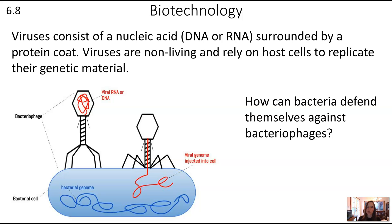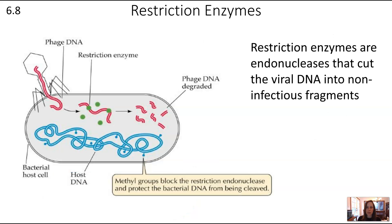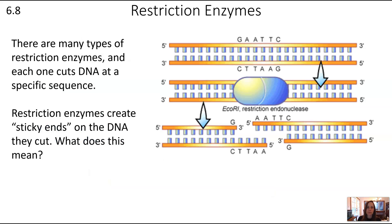Viruses can't replicate their own DNA on their own, so they need to use other cells' mechanisms to get more copies. How can a bacterial cell defend itself? One way is through restriction enzymes, which are endonucleases — enzymes that cut up DNA — chopping viral DNA into non-infectious fragments. The bacteria protect their own DNA from being cut by tagging it with methyl groups.